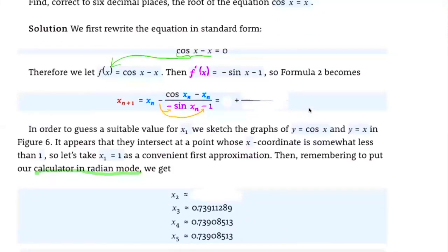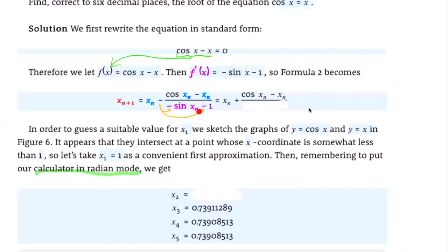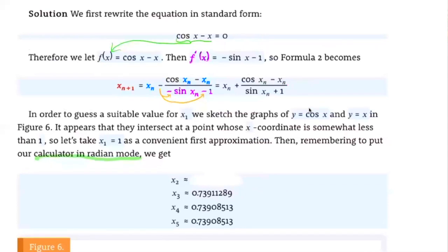So simplifying, the formula becomes: x of n plus 1 equals xn plus the quantity cosine of xn minus xn, divided by sine of xn plus 1. This is the simplified iteration formula we'll use for the n plus 1 approximation.